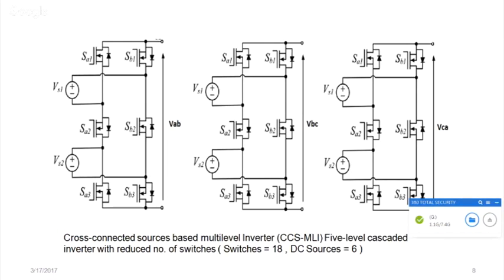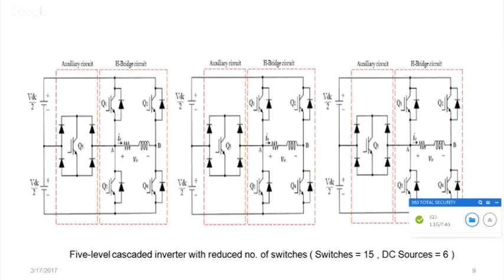A further configuration introduces bi-directional switches (e.g., Q5) using diode combinations to allow current flow in both forward and reverse directions. This reduces the switch count to 15 while keeping 6 DC sources. Bi-directional MOSFETs using diode configurations are now commercially available, simplifying the implementation.